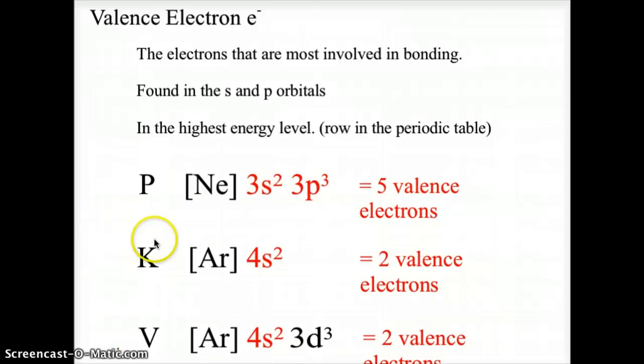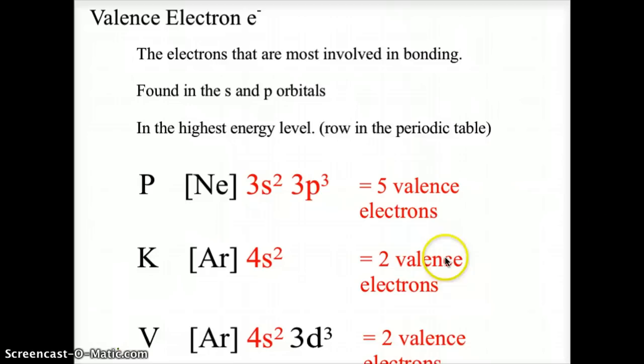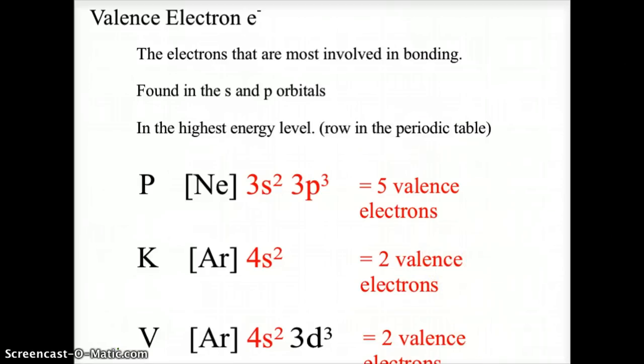For potassium, the noble gas notation is argon, 4s2, showing two valence electrons.